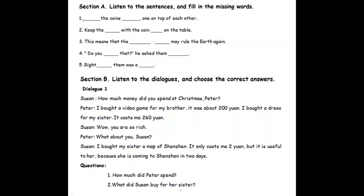Number two: keep the palm with the coin flat on the table. Number three: this means that the extinct giants may rule the earth again. Number four: do you hear that? He asked them worriedly.